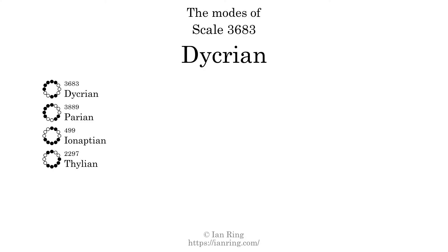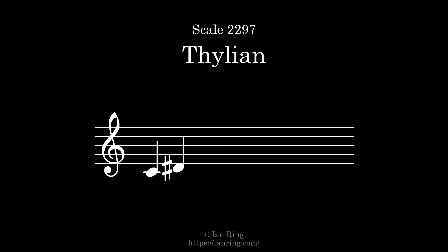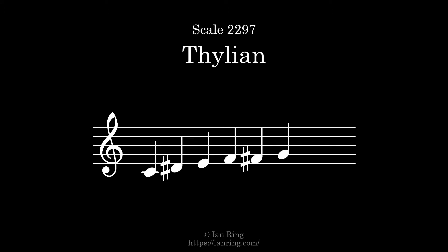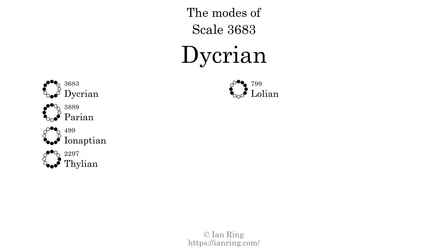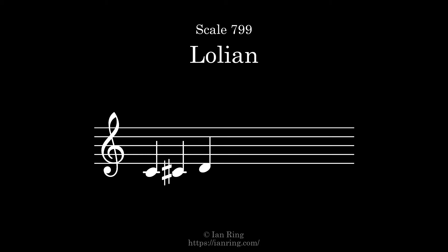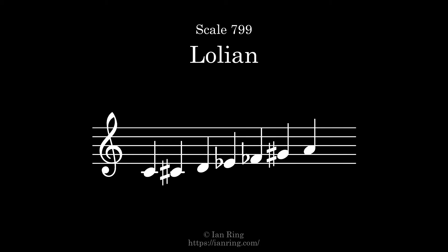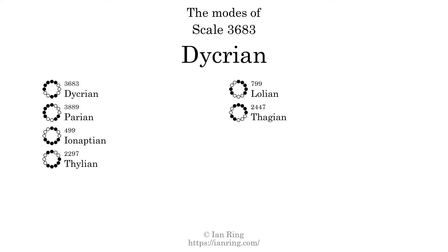The fourth mode is scale 2297, also known as Parian. It sounds like this. The fifth mode is scale 2447, also known as Parian. It sounds like this. The sixth mode is scale 2447, also known as Parian. It sounds like this.